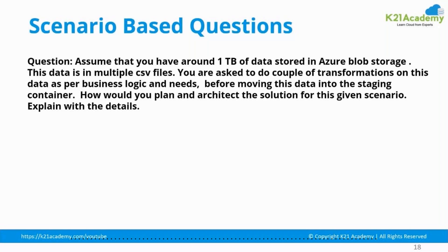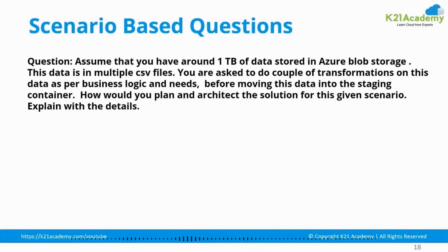You have one terabyte of data — whether it's one terabyte or one petabyte does not make a big difference. But we can clearly observe that these are delimited CSV files. As soon as I know these are CSV files, I come to the conclusion that schema can differ between these files — there can be a schema drift. CSV files do not enforce a schema, so I have to be careful about schema management. Schema inference can be done since it is batch data, but we must be aware that schema drift, schema evolution, and schema changes may occur.